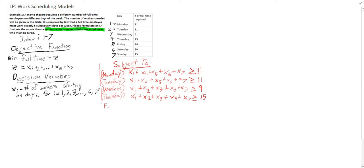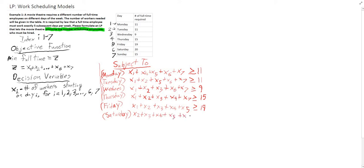We have Friday — so we know X1, and we'll take that minimum required of 19. Now Saturday: someone starting work on Monday is actually not going to be working on Saturday, so we're going to start this with X2. Someone starting work on Saturday will be working on Saturday. So that has to be greater than 20.